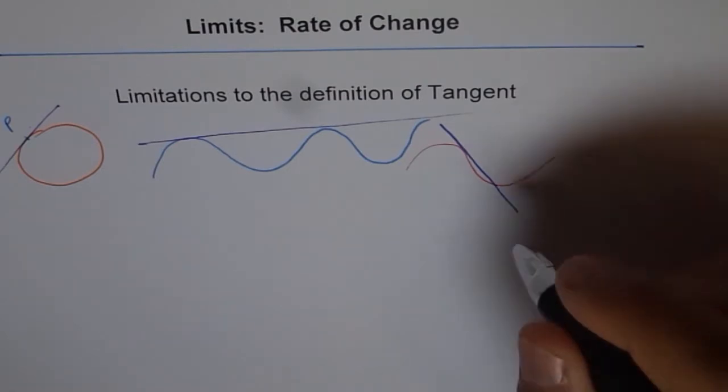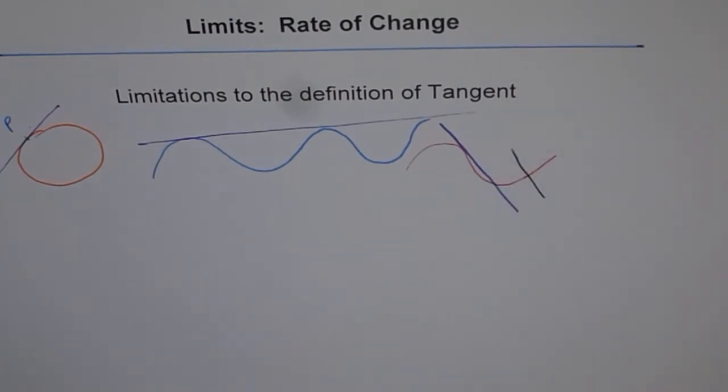For example, I can draw a line like this. Now it touches the curve at one point, but it is not a tangent at that point. It looks more like a normal than a tangent at that point. So therefore,